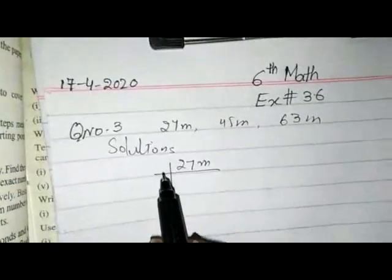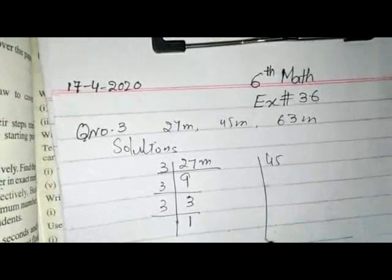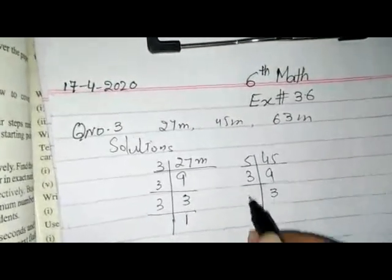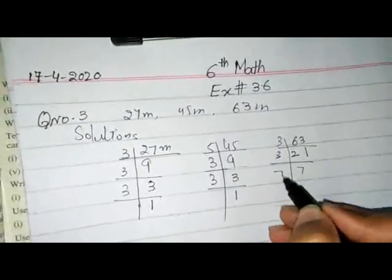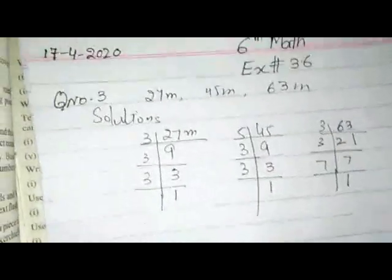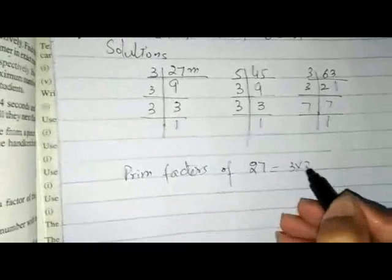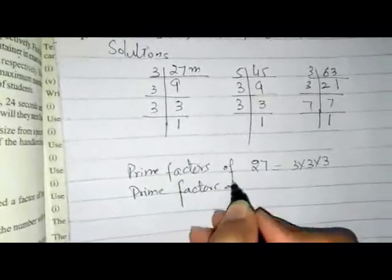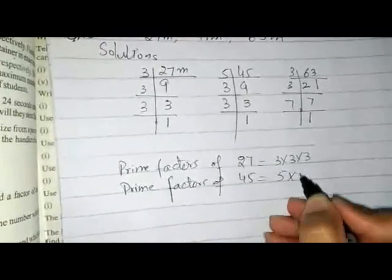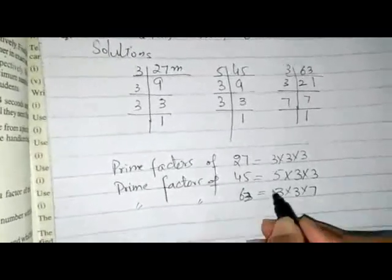Using prime factorization: 27 = 3 × 3 × 3, 45 = 5 × 3 × 3, and 63 = 3 × 3 × 7. So the prime factors of 27 are 3 × 3 × 3, prime factors of 45 are 5 × 3 × 3, and prime factors of 63 are 3 × 3 × 7.